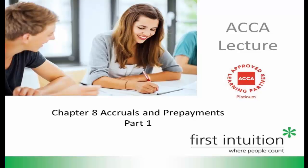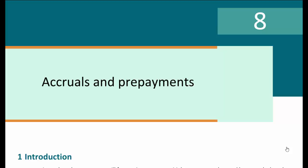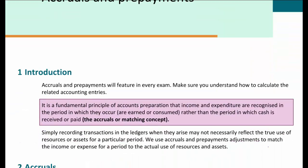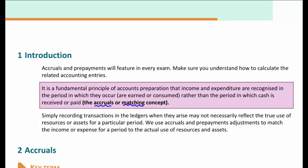Welcome to Chapter 8, which is on accruals and prepayments. This is a very commonly examined area and you can expect to see at least one question on this topic in your exam. Accruals and prepayments are a type of year-end adjustment, and the purpose of making this adjustment is to apply the accruals concept — to make sure that we show as our expenses the amount incurred during the year, and in terms of income, the amount earned during the period. We make these adjustments because the cash we pay or receive and the invoices we pay or receive may not exactly match the pattern over which we are using resources or earning income.